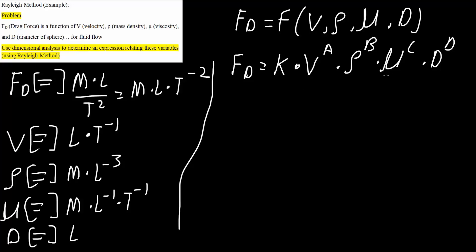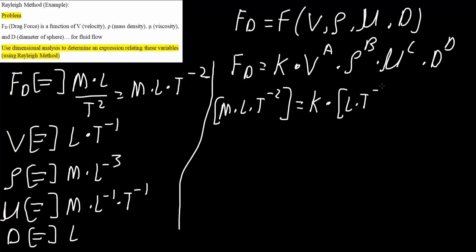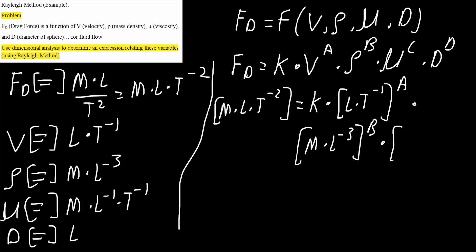Next, we replace each variable with its dimensions. So we write: mass times length times T raised to negative 2 equals K times (length times T raised to negative 1) raised to A, times (mass times length raised to negative 3) raised to B, times (mass times length raised to negative 1 times T raised to negative 1) raised to C, times length raised to D.